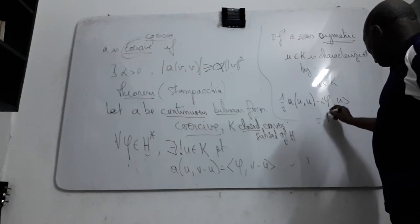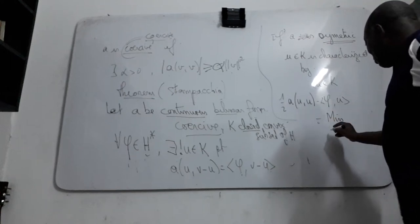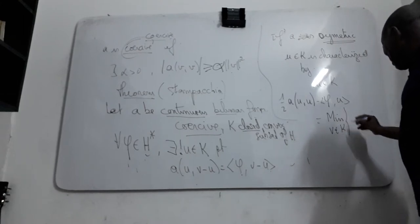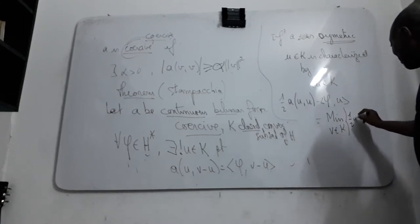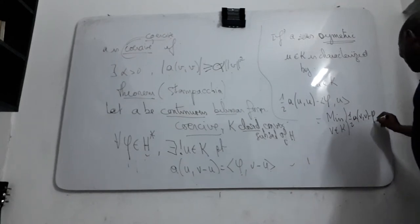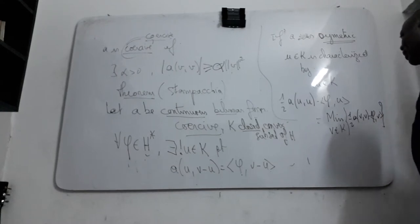5B is equal to the minimum when B is an element of K, like this, of the half of A of also V, V minus 5B. You have this condition. You have this one.